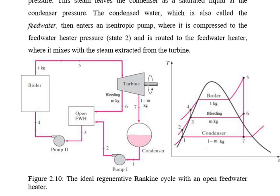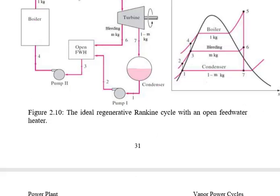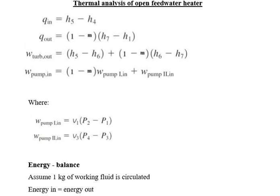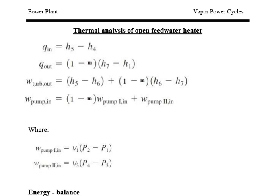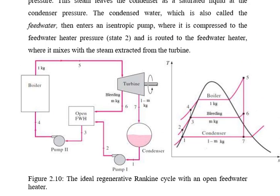This is the regenerative cycle. An important concept introduced here is the bleeding section, where steam is extracted from the turbine. This diagram represents the ideal regenerative Rankine cycle with the open feed water heater. Now we go to the energy balance analysis: how much heat is added, how much heat is rejected, and how much heat is extracted from this section.